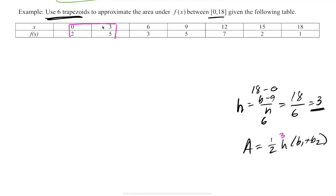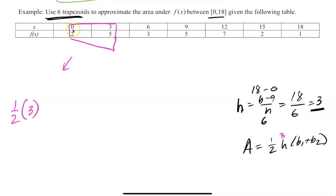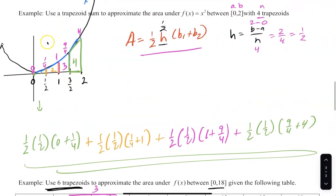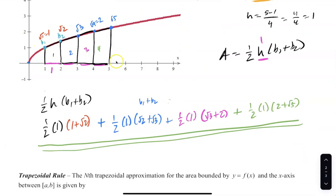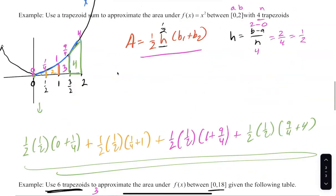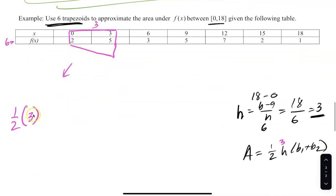The area of the first trapezoid is (1/2)(3)(f(0) + f(3)) = (1/2)(3)(2 + 5). Remember, the bases are the y-values from the table — not the x-values. The x-values should be separated by 3; the y-values can be anything. Trapezoid 1 done.